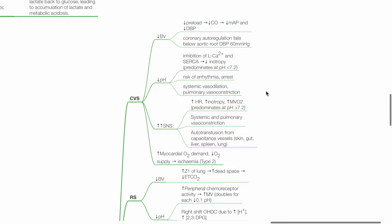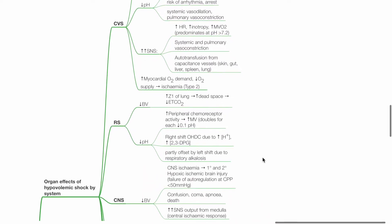Systemic vasodilation and pulmonary vasoconstriction occurs due to acidosis. Increased sympathetic outflow results in increased heart rate, inotropy and myocardial VO2. Systemic and pulmonary vasoconstriction occurs. Autotransfusion from capacitance vessels from the skin, gut, liver, spleen and lung occurs. There is increased myocardial oxygen demand and reduced oxygen supply, increasing the risk of type 2 myocardial ischemia.